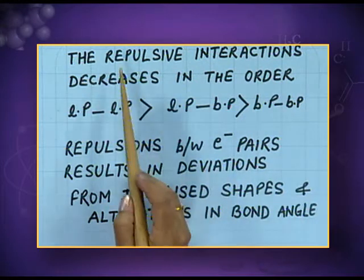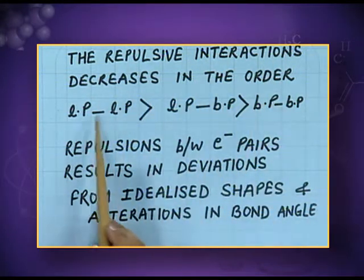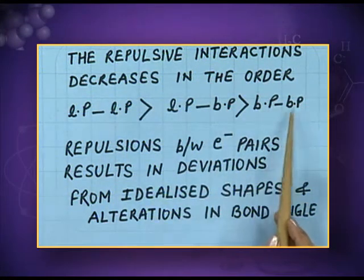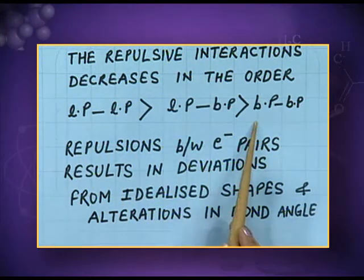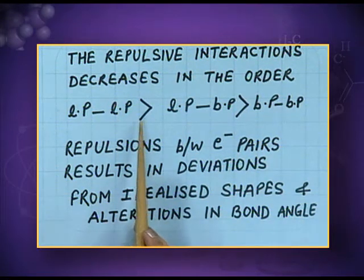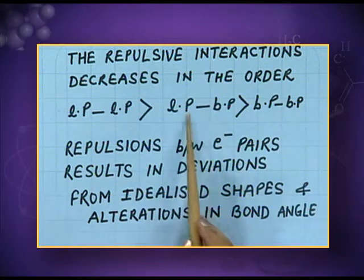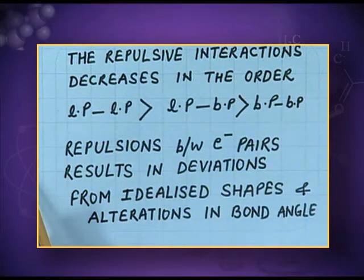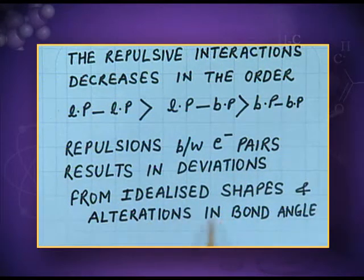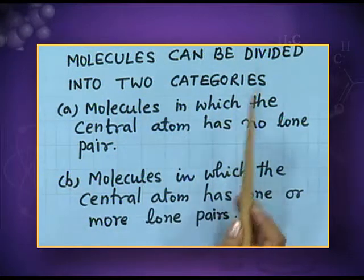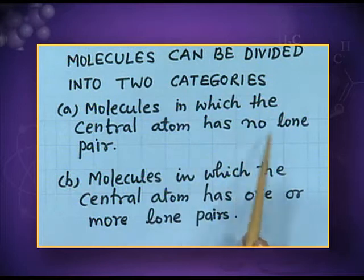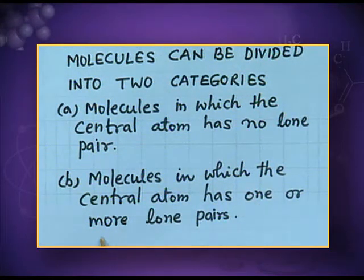There are three types of repulsions, and the repulsive interactions decrease in the order: lone pair–lone pair repulsion is greatest, followed by lone pair–bond pair repulsion, which in turn is greater than bond pair–bond pair repulsion. Repulsions between electron pairs result in deviations from idealized shapes and alterations in bond angle. Molecules can be divided into two categories: those in which the central atom has no lone pair, and those in which the central atom has one or more lone pairs.